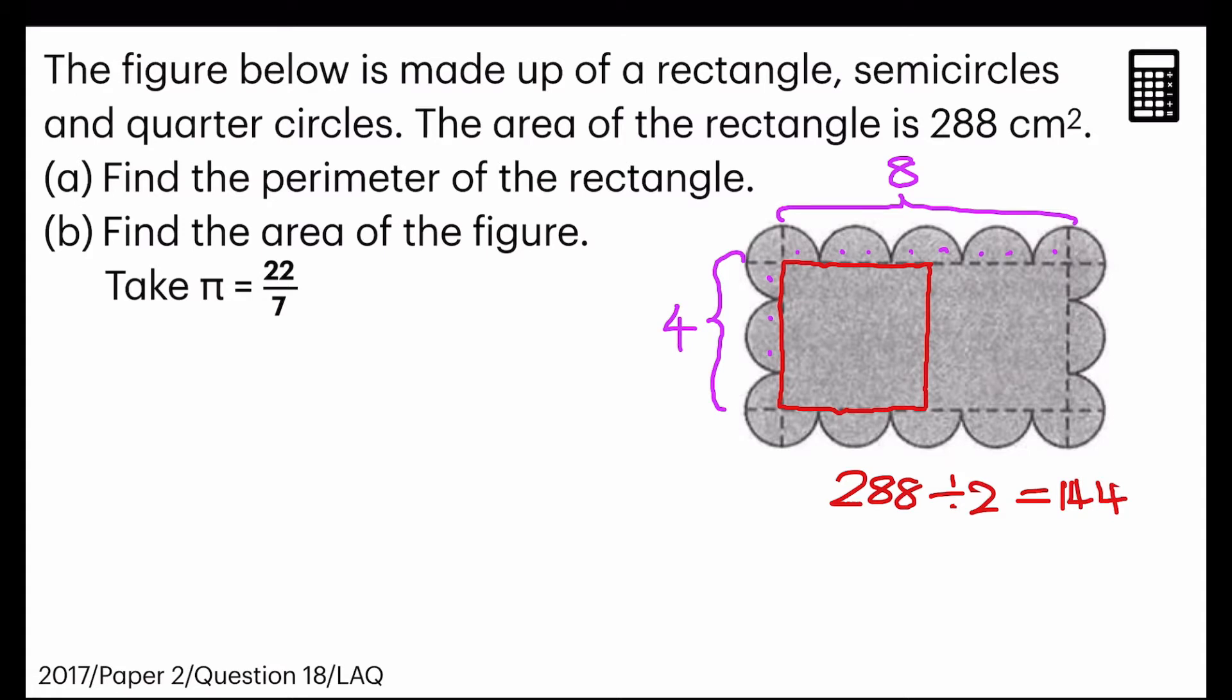Which means the area of this square here now is 144 square centimeters. So to find one side, I just have to take square root of 144 equals to 12. So now I know one side is 12 centimeters. Am I right?